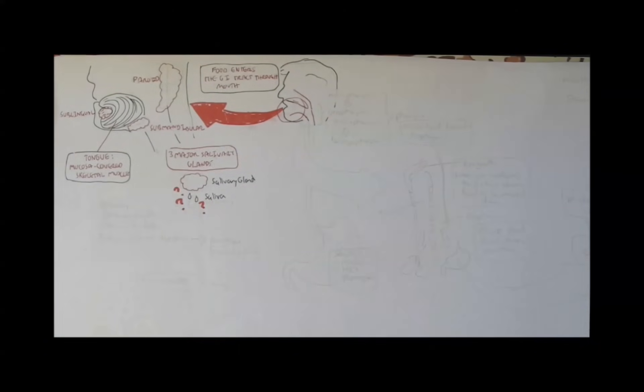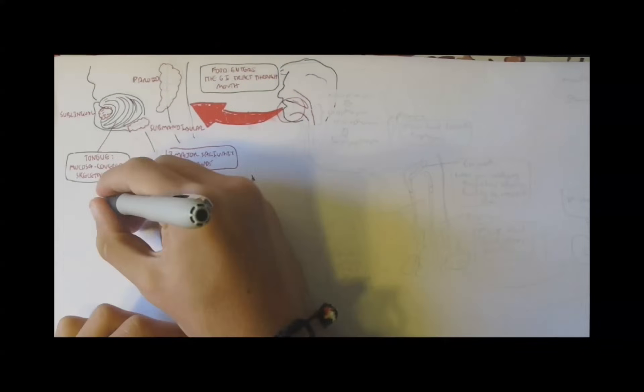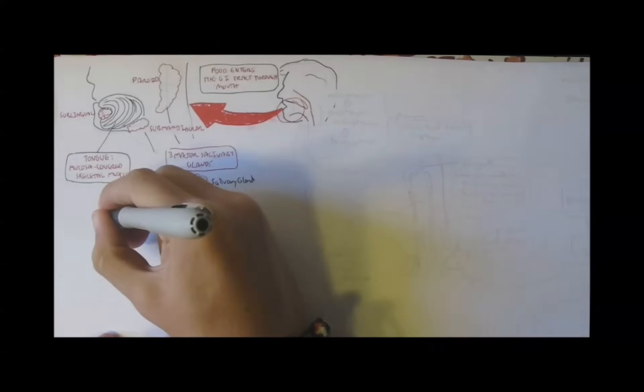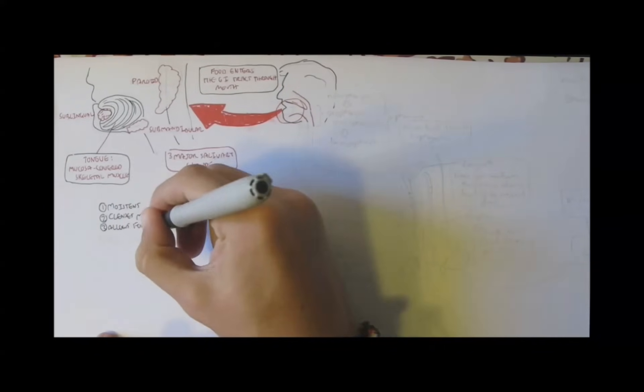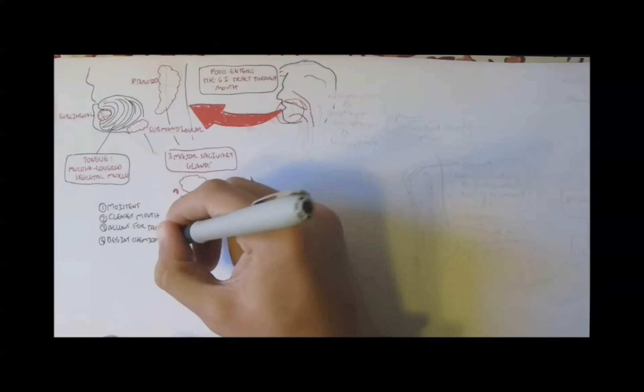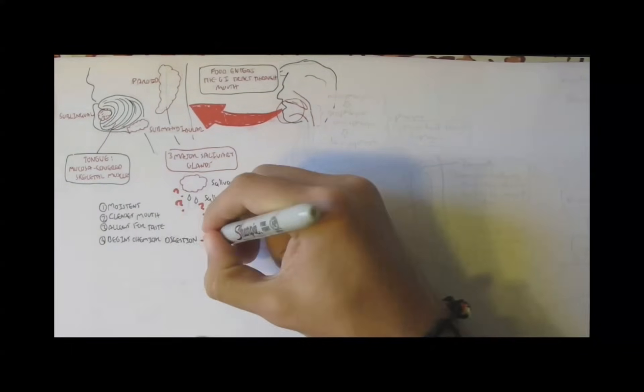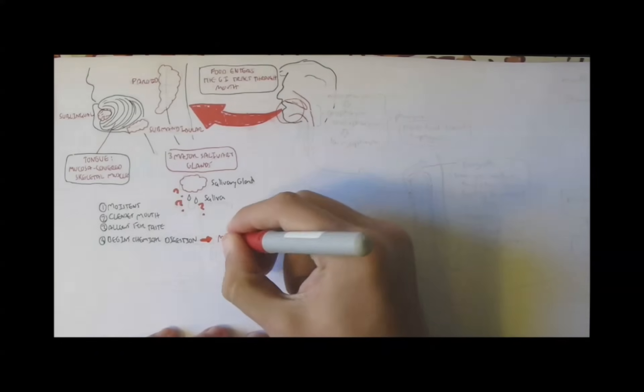So what is saliva? Saliva is composed largely of water, but it has other compounds in it that make it an important part of the digestive system. It moistens and cleans our mouth, for one. It moistens food. It aids in compaction, dissolves chemicals around the food to allow us to taste the actual food.